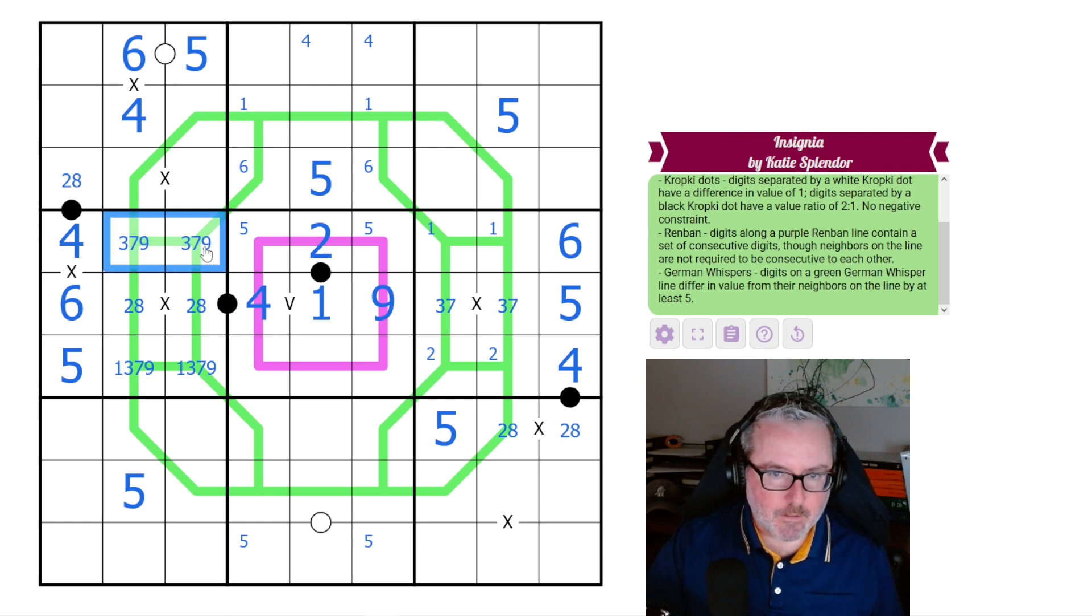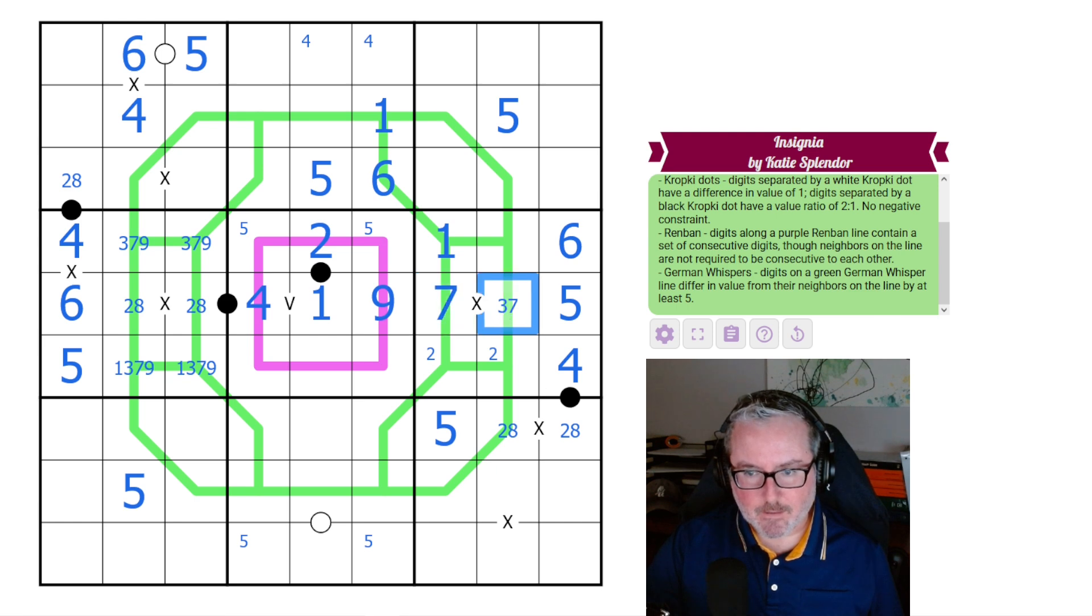Okay. We can do a little bit more up here, I think, thinking about this situation. This can no longer be a 6 anymore because that can't be a 1. So this is the 6. Therefore, these are the 1s. Let's get rid of all this stuff. This is a 1. This is 7. This is 3. This is 2. And now we are moving.